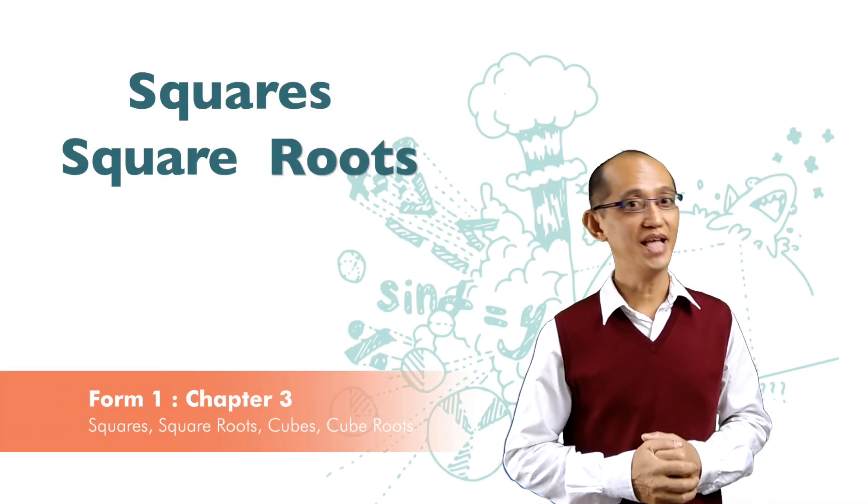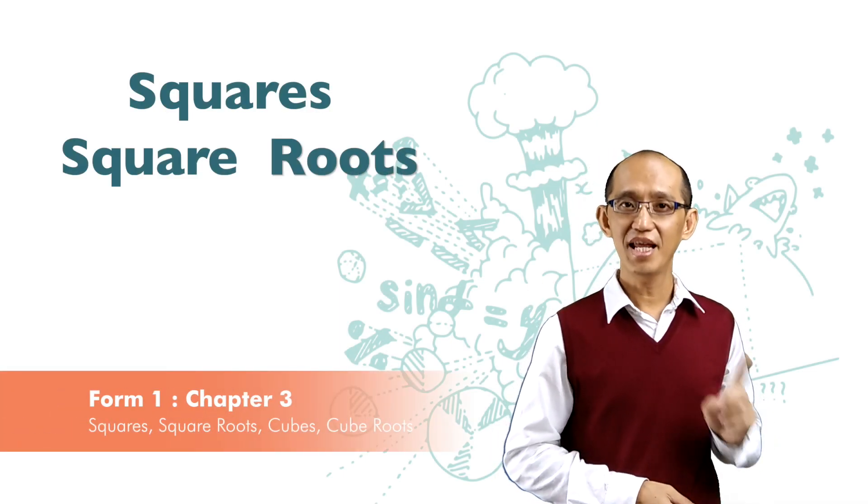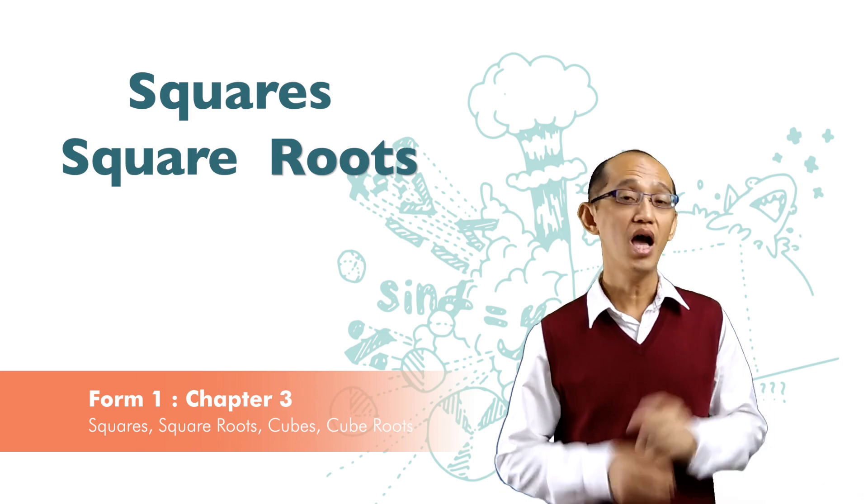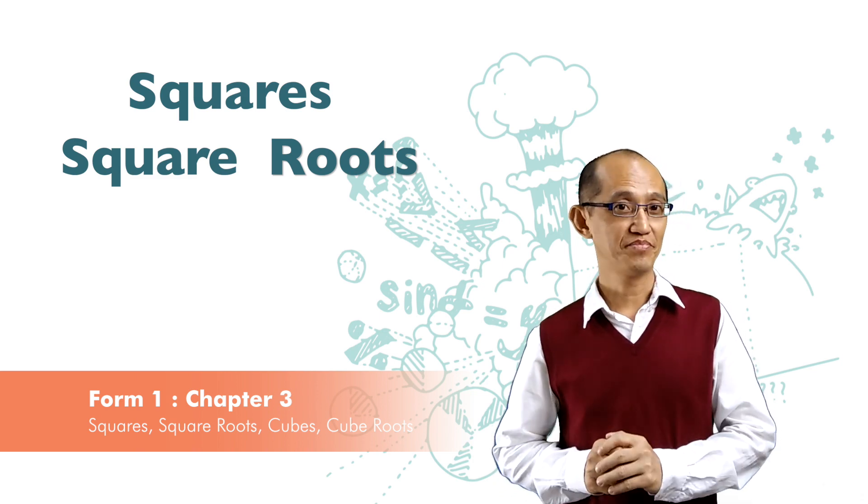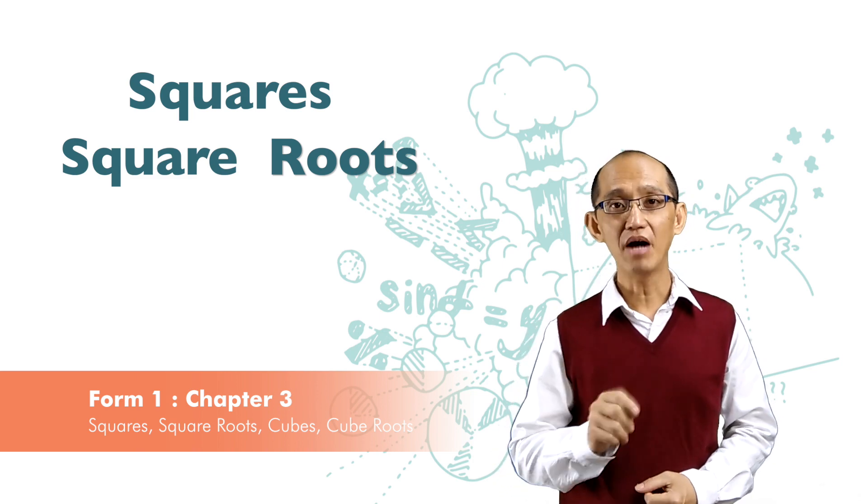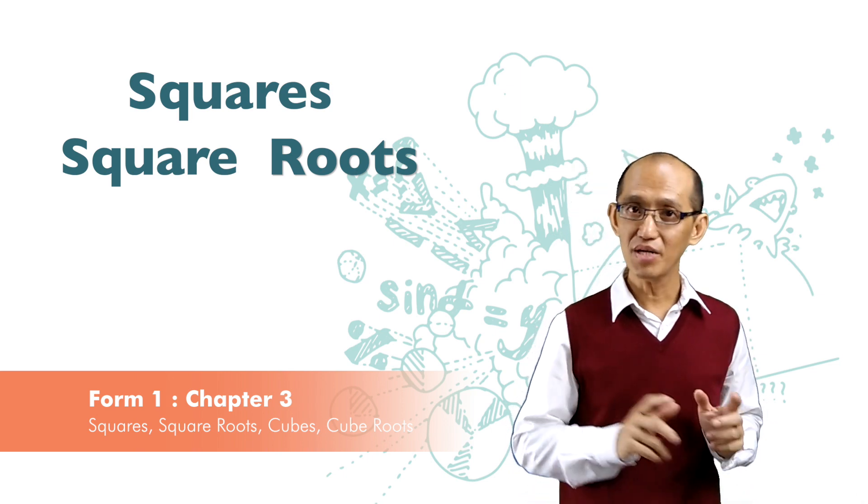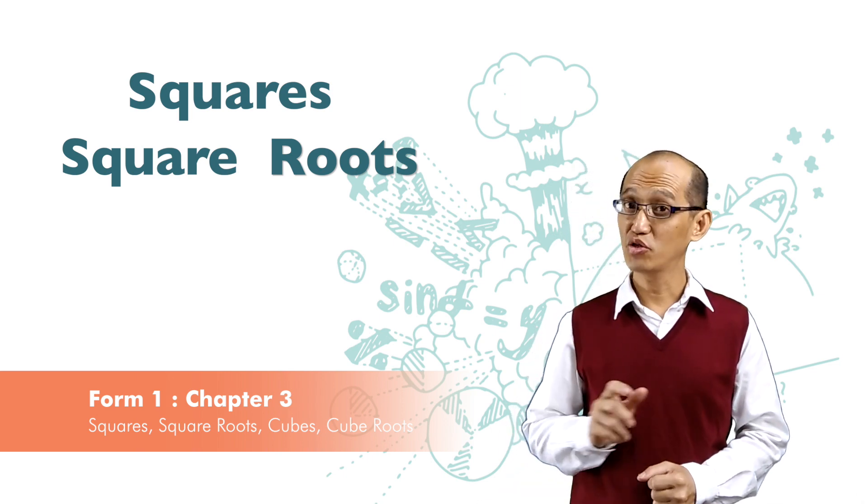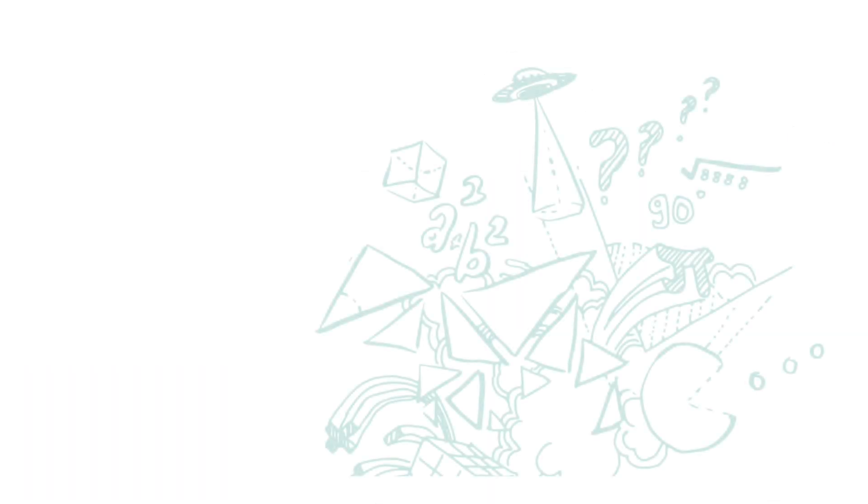Today we are going to look at square and square root. Let's first look at square. What is the meaning of square? When the number is multiplied by itself, the product is a square.